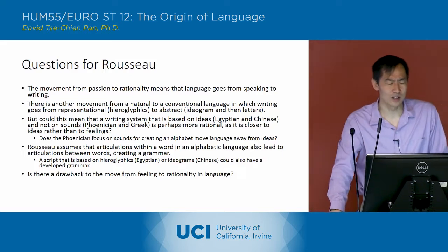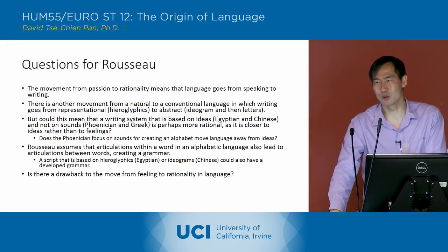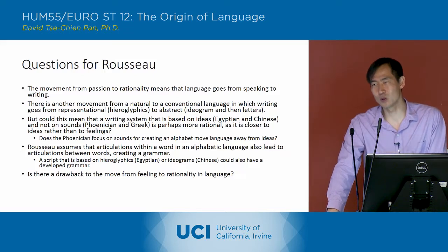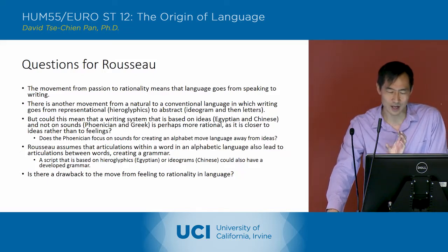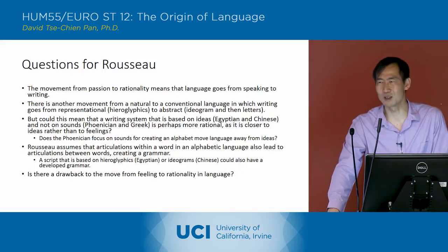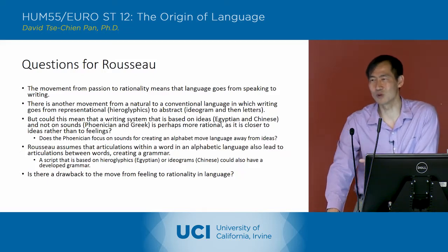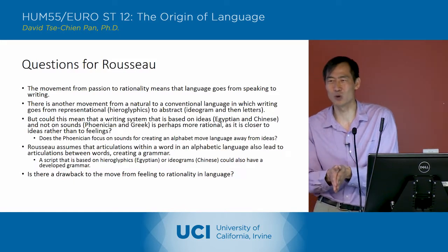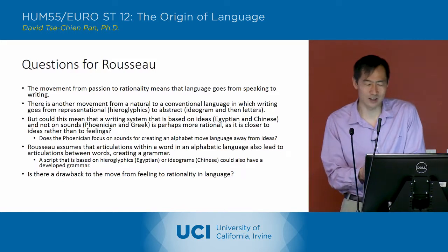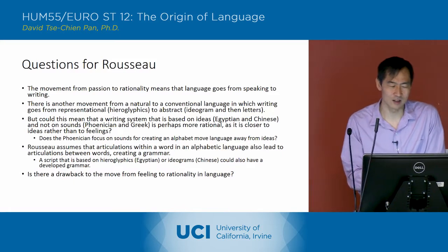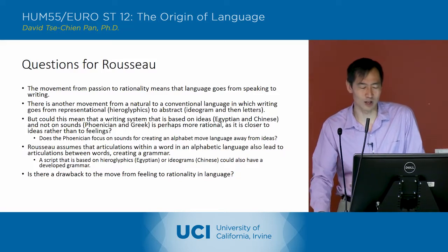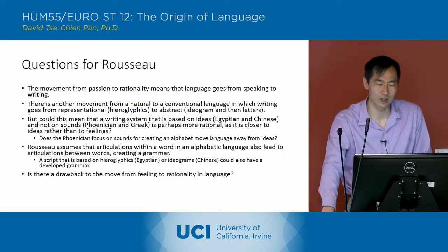If he's linking ideas with the more advanced types of language, then it might be that you would have to place Egyptian and Chinese as more advanced languages than the Phoenician and Greek, which are so hung up with the sounds.